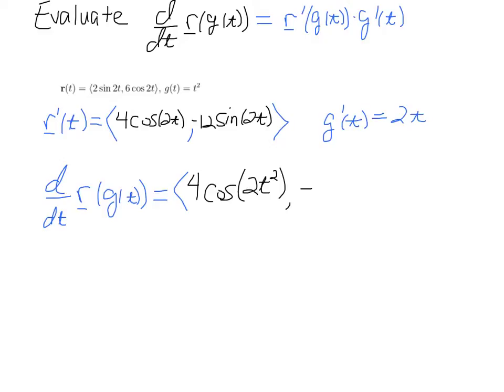And similarly, we have minus 12 sine of 2, and then this argument's t, but remember, we're evaluating at g of t, so I have to substitute this t squared in. And then, just like we did in calc 1, we have that expression, and then we're going to multiply this by g' of t, which is just simply 2t. And we could do a little simplification by distributing the scalar into the vector.